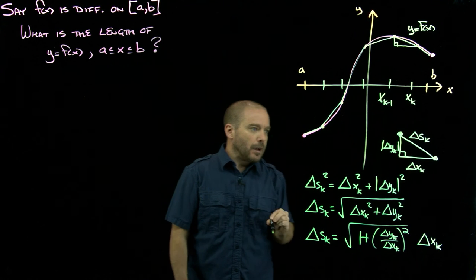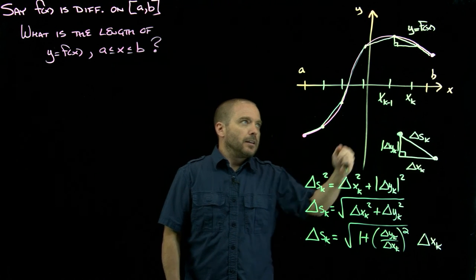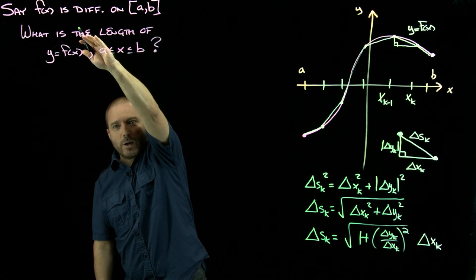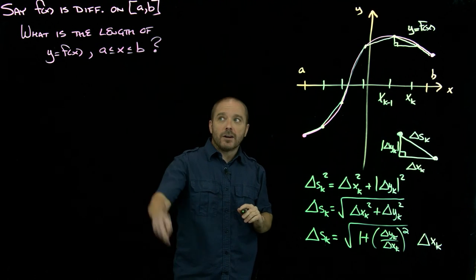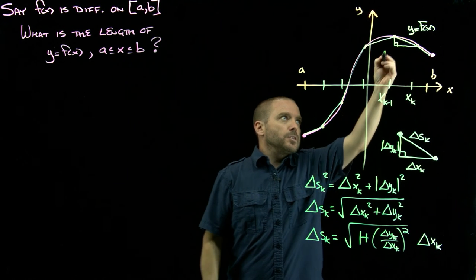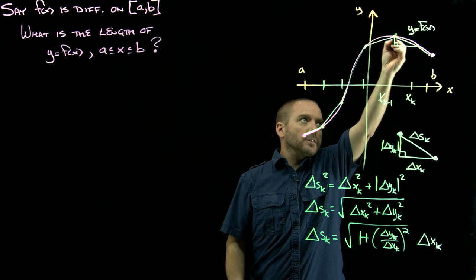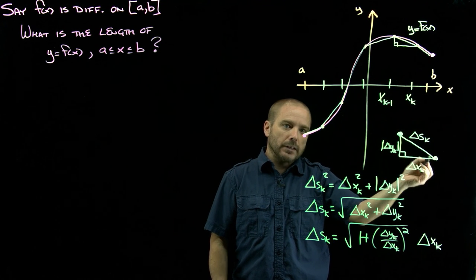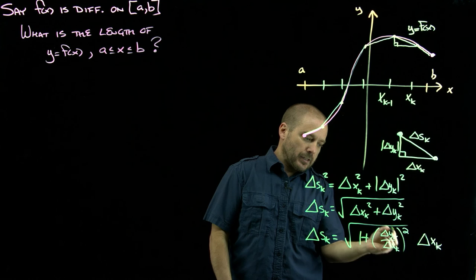We had a very important theorem in calc one that told us that if the function's differentiable—which is why we required that this function be differentiable—if it's differentiable, there's going to be some point in between here where the slope of the tangent line is the same as the slope of the secant line. That's going to allow us to get rid of this.